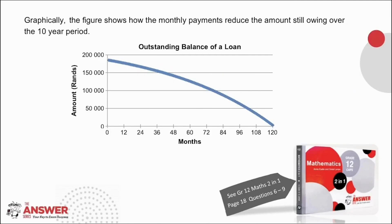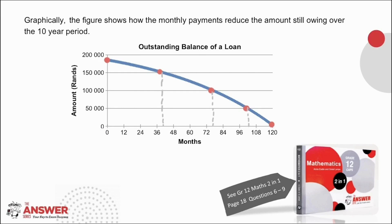This is not part of the question, but it is interesting to look at the scenario graphically. The loan started at R185,000. To drop from R185,000 to R150,000 — only a R35,000 drop — took over three years. From R150,000 to R100,000, a R50,000 drop, took just under three years. The next R50,000 drop to R50,000 happened over about two years, and the final R50,000 drop took about one and a half years. This trend shows that as the loan value gets smaller, the interest portion of the payment decreases and the portion going towards paying off the loan increases — this is what causes the curve's shape.